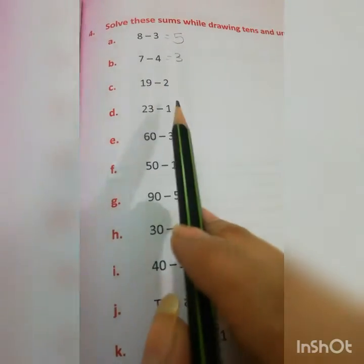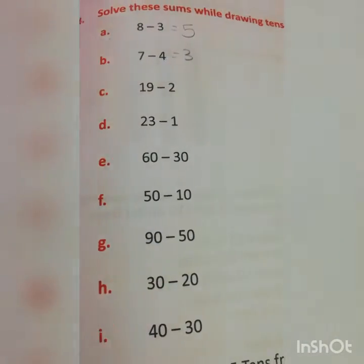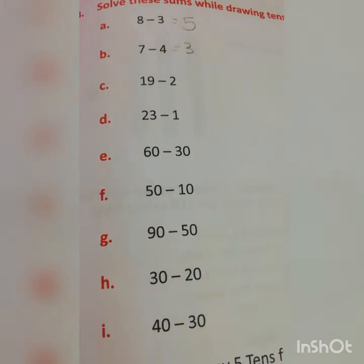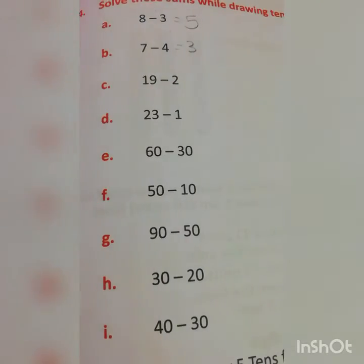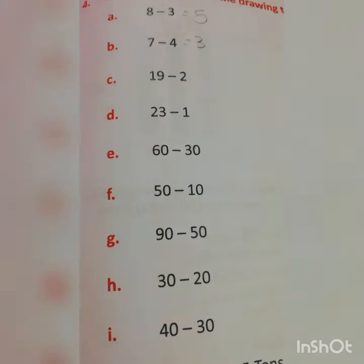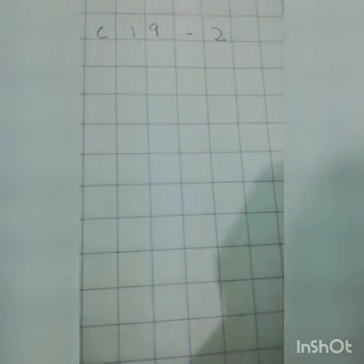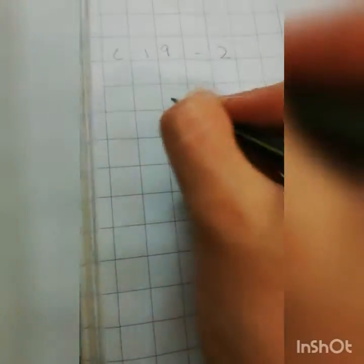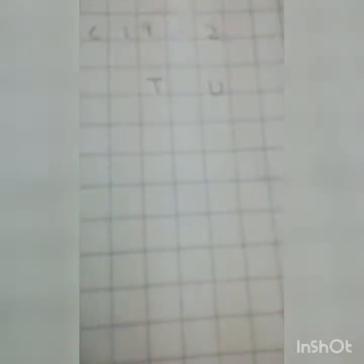Now 19 minus 2. How will you solve this one? You have to draw tens and units. Now you will draw it here. Number C: 19 minus 2. First you will draw the tens and units. Very good.